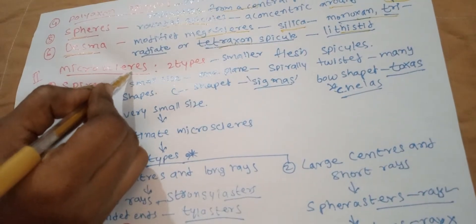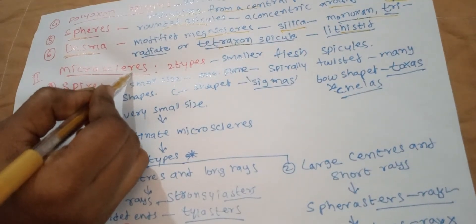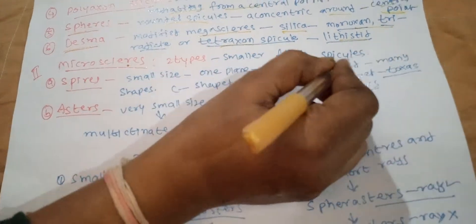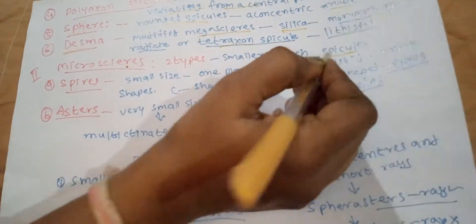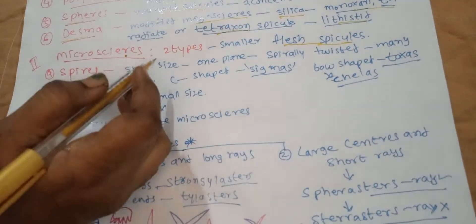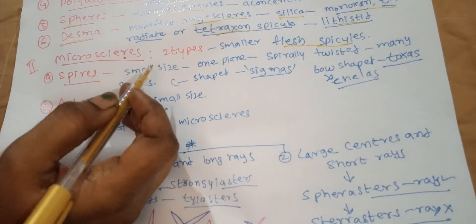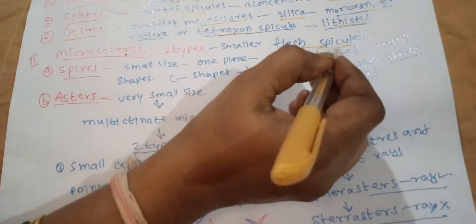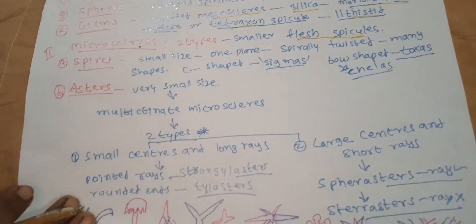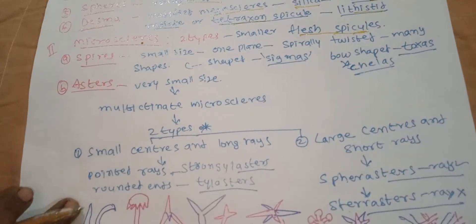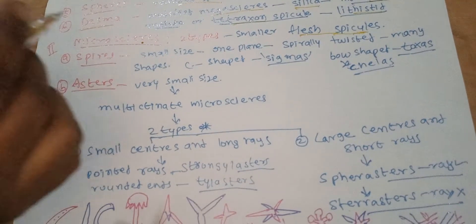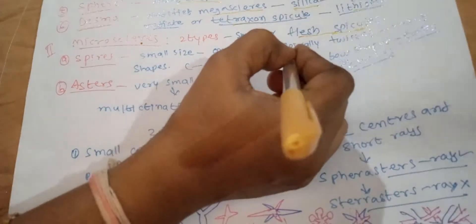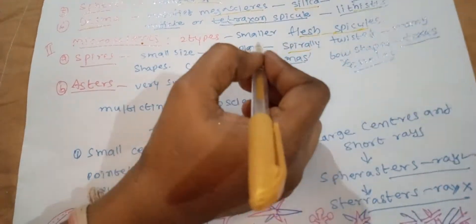Microscleres are the smaller flesh spicules that occur throughout the mesenchyma. These are of two types: sigmas or chelae (spears), and asters.